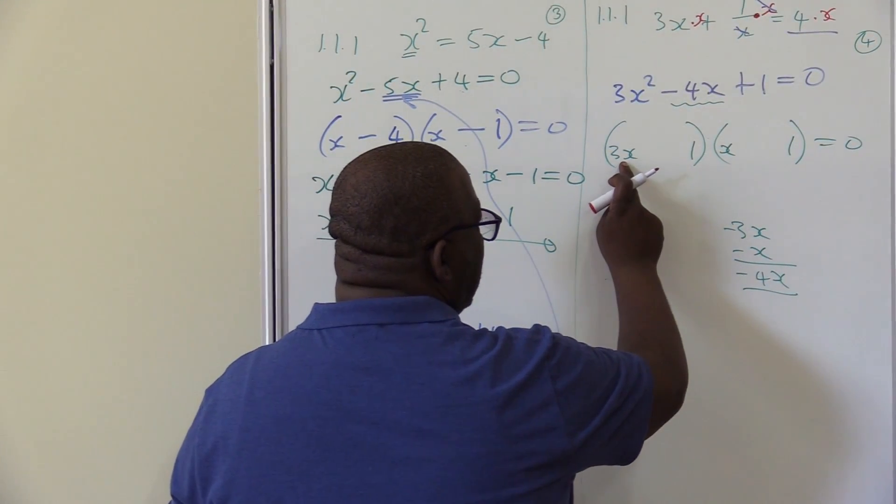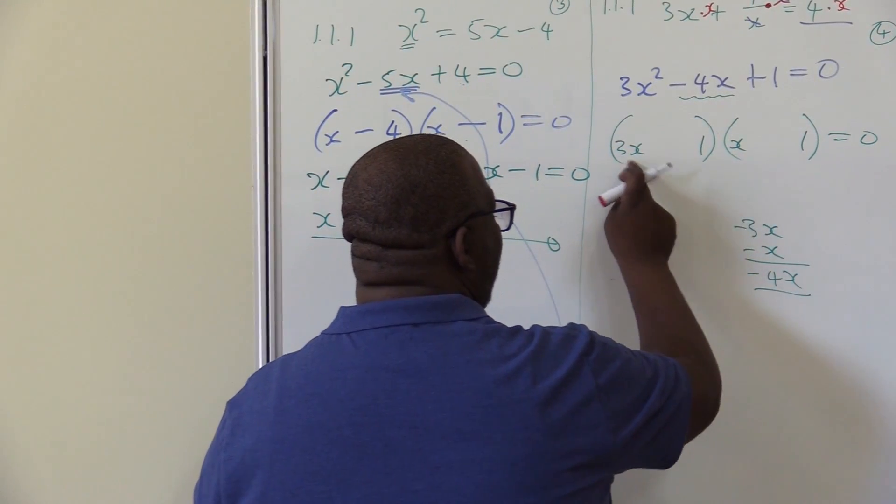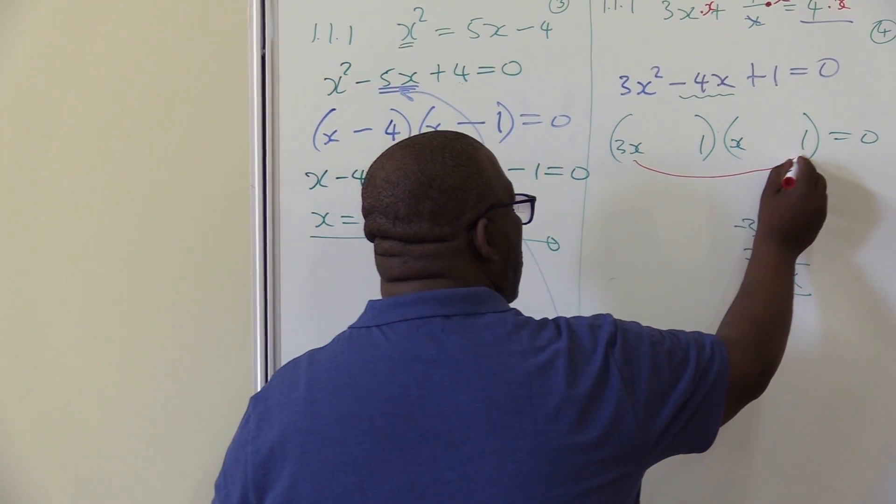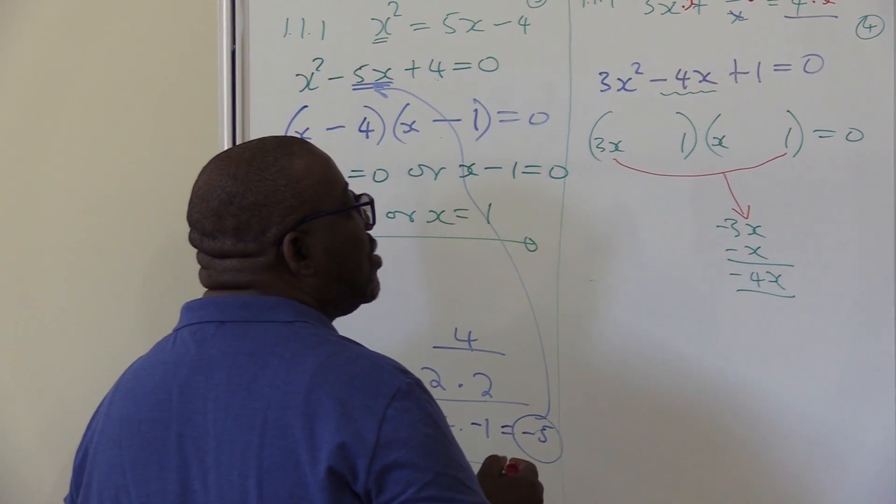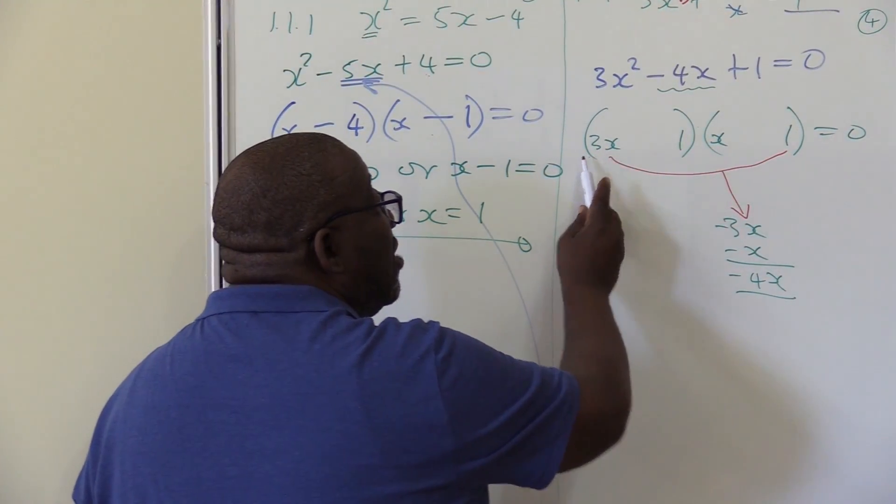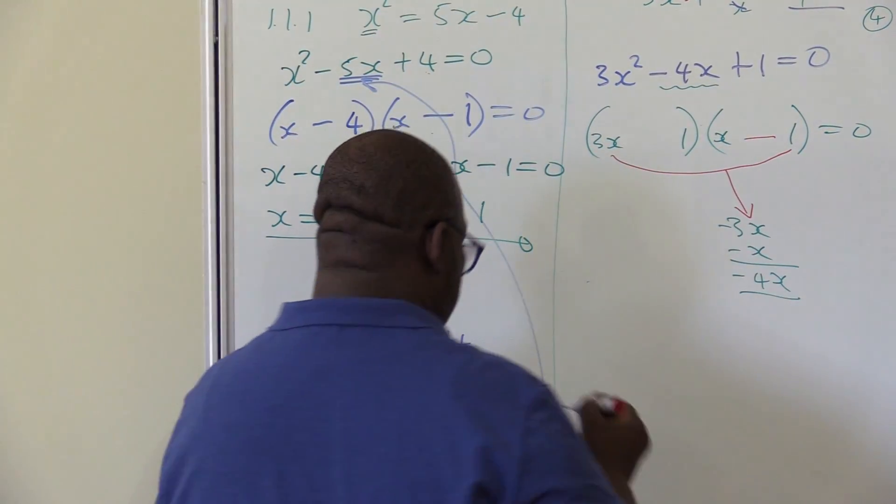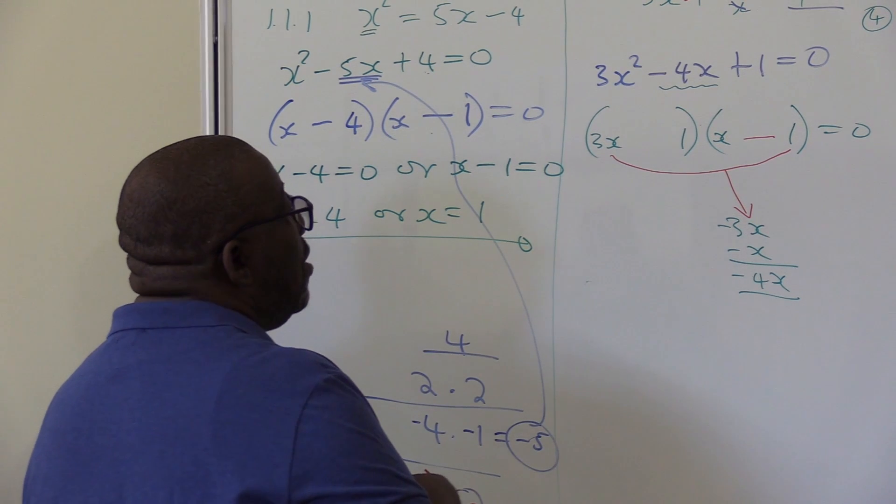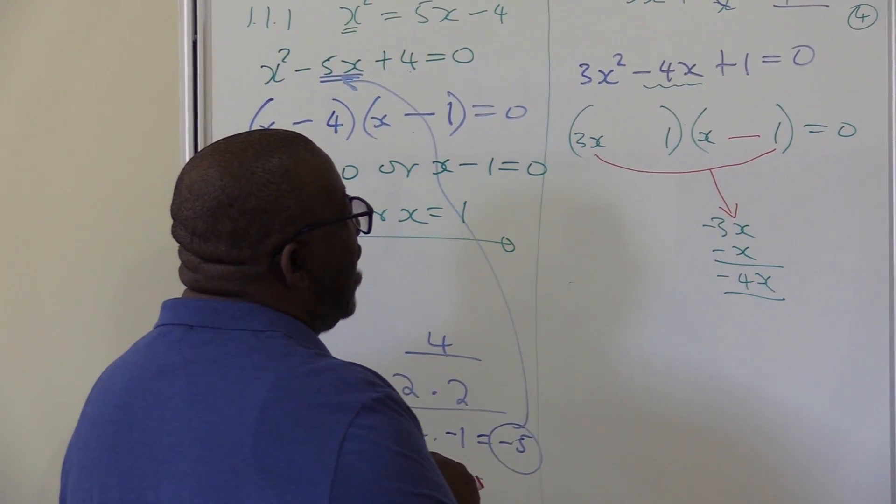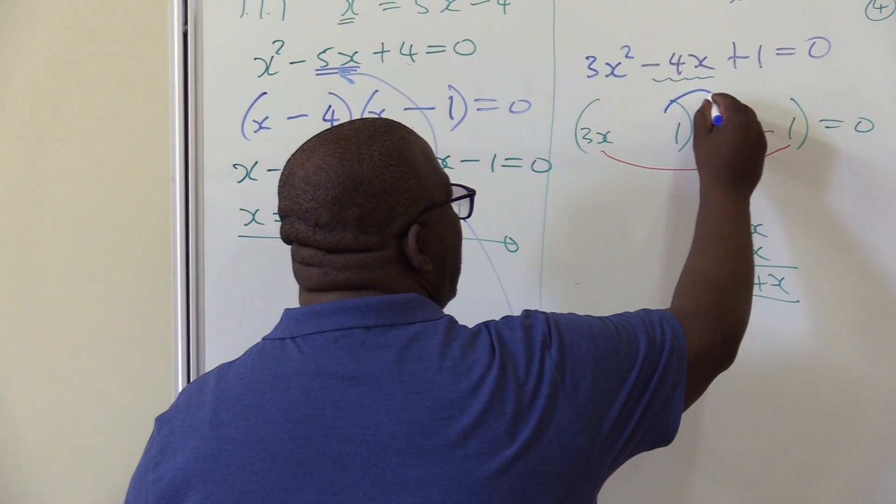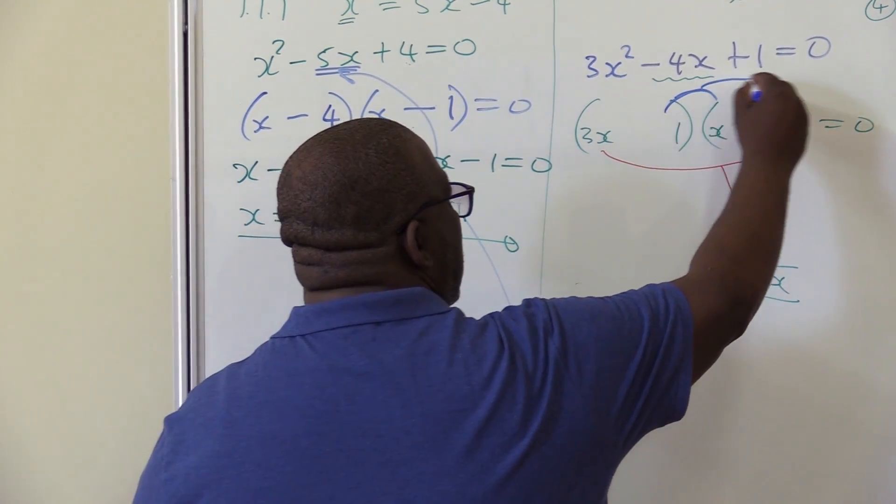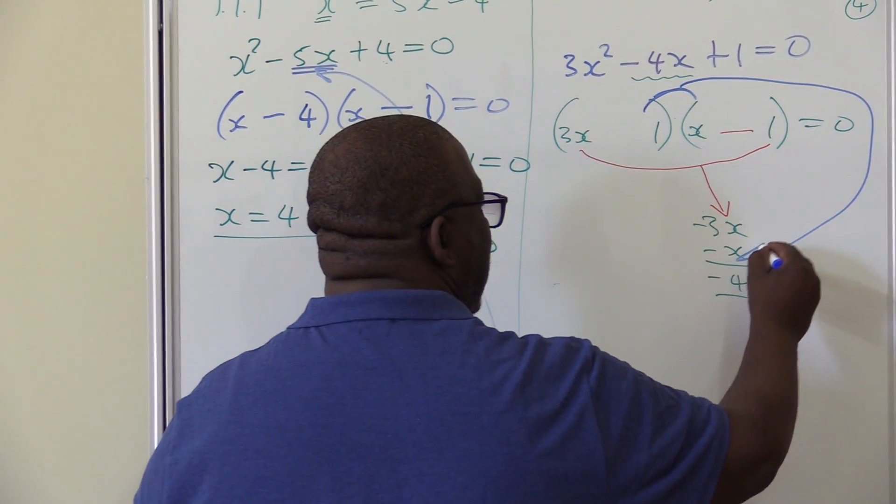Let's push in our signs. This is where we get 3x - this times that. If I multiply these two, I must get minus 3x, so it means one of them must be negative. Since 3 is positive, then one must be negative. That's the first one. Let's look at the next one. The x - so if I multiply this and that, these two, I must get what? I must get minus x.